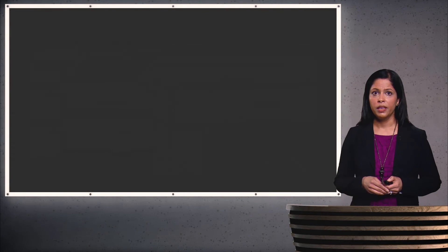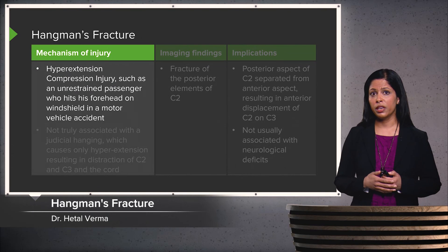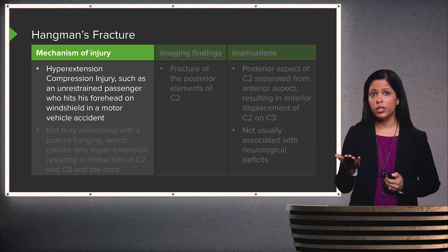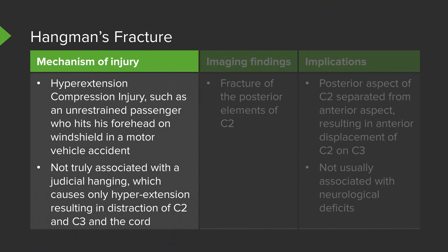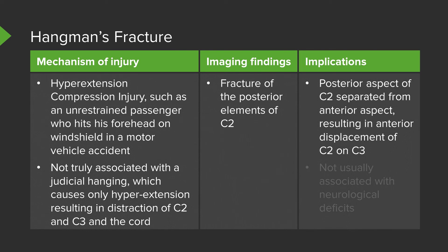A hangman's fracture is a hyperextension compression injury that can occur in an unrestrained passenger who hits their forehead on a windshield in a motor vehicle accident. This is not truly associated with judicial hanging, which causes hyperextension resulting in distraction of C2 and C3 and distraction of the cord. Imaging findings include a fracture of the posterior elements of C2, with the posterior aspect of C2 separated from the anterior aspect, resulting in anterior displacement of C2 on C3. This is usually not associated with neurological deficits.